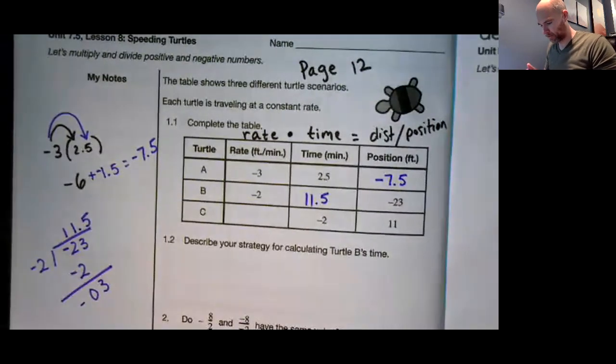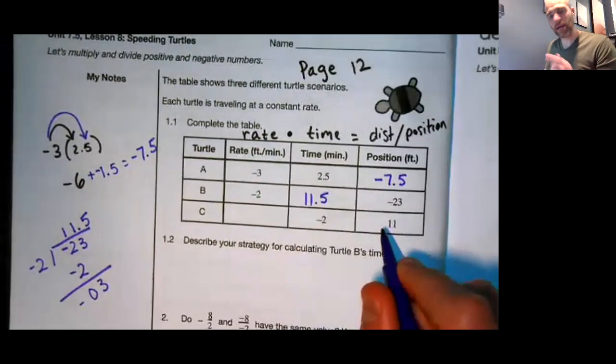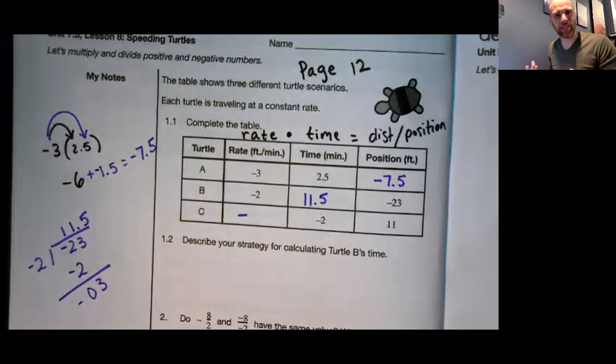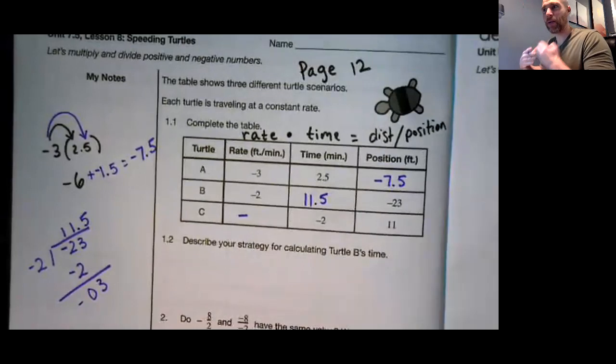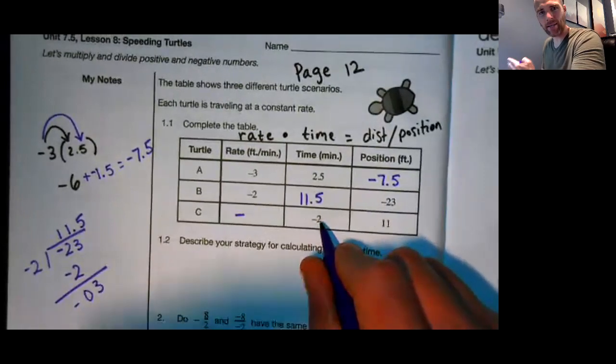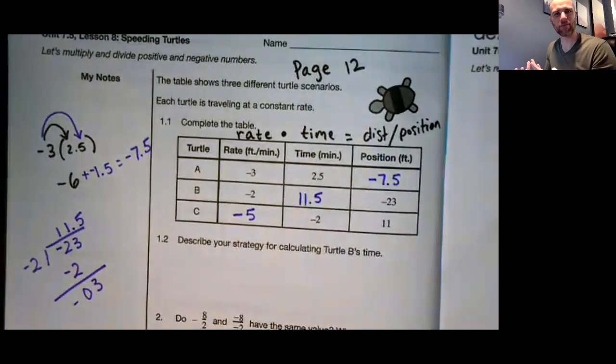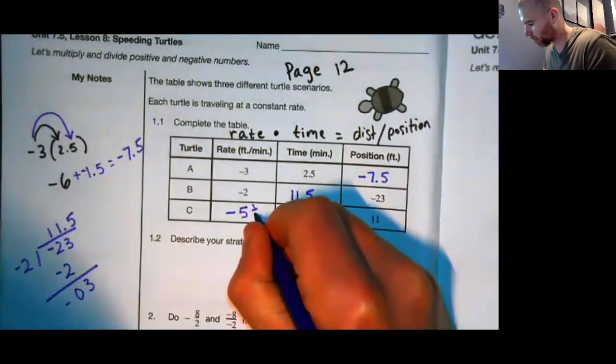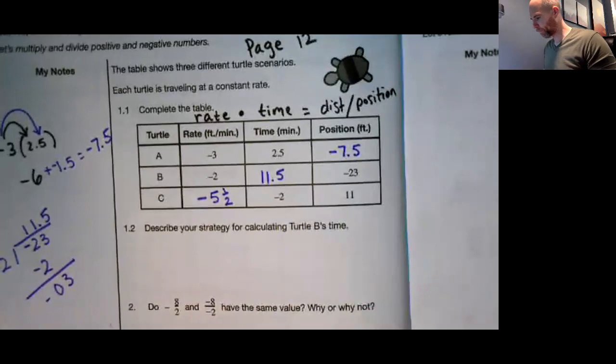And then the last one, here I have 11 divided by negative 2. I know my answer is going to come out negative because I've got a positive divided by a negative. Here's another way that I could think about doing these divisions. I can break 11 into 10 and 1. If I divide 10 by 2, I get 5, and then if I divide that 1 by 2, that's a half. So I could write this as 5.5, or let's go 5 and a half.